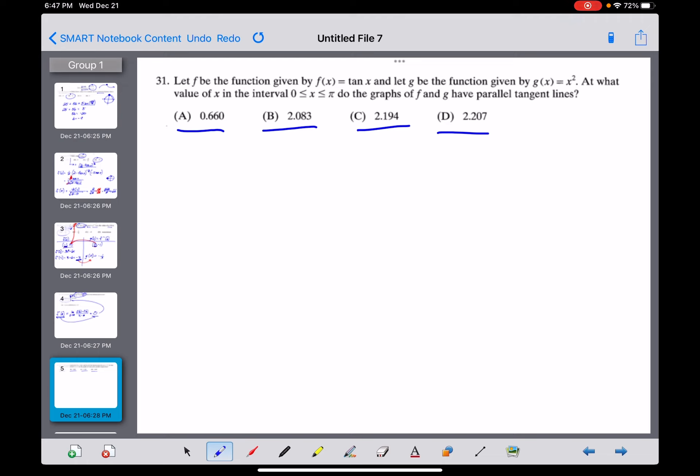We've got two functions: f(x) is tangent of x, and g(x) is given by x squared. At what value of x in this given interval do the graphs of f and g have parallel tangent lines?